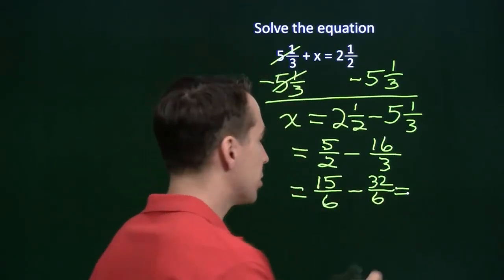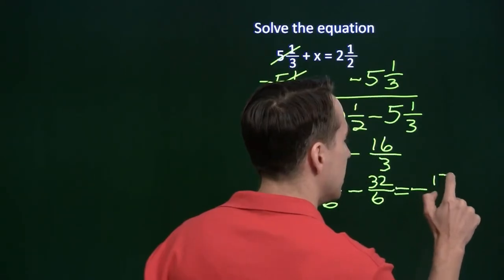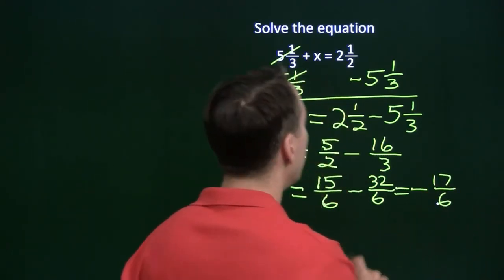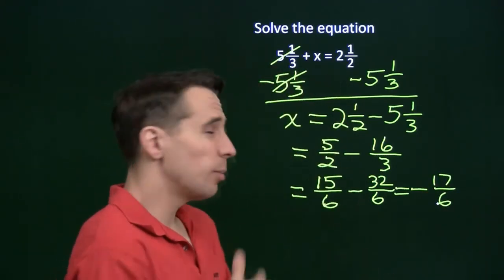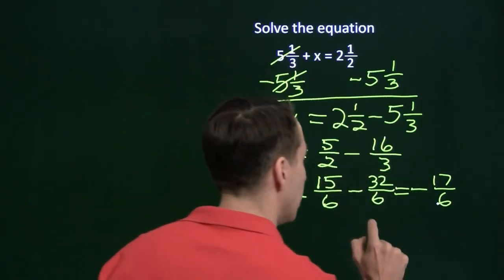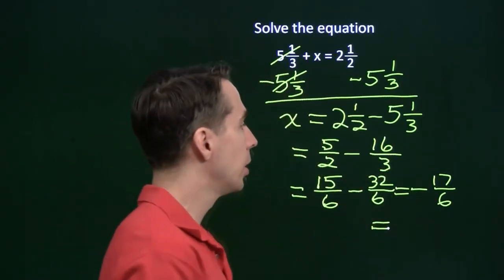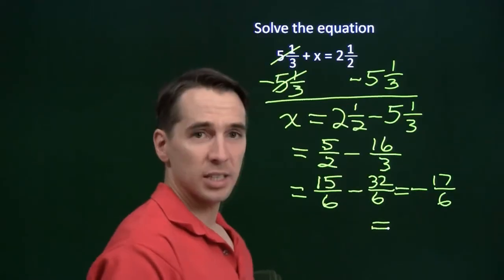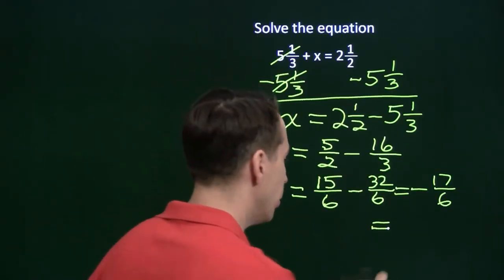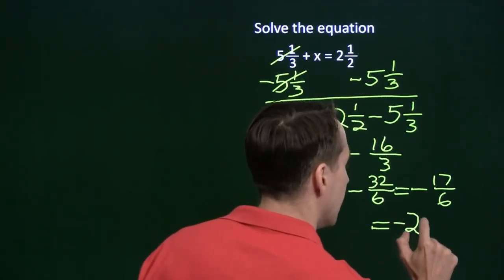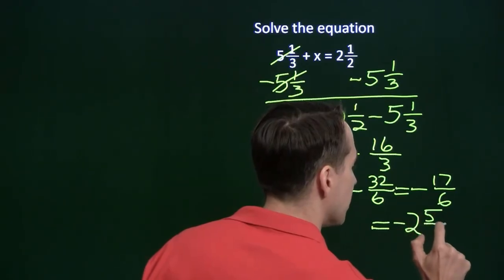And then we subtract, 15 minus 32 is negative 17 over 6. Now of course, the problem is in terms of mixed numbers. We want to write our final answer as a mixed number. So let's see, 17 sixths, well, 12 sixths is 2, so this is negative 2 and 5 sixths.